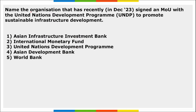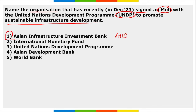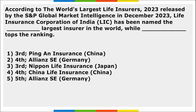Next: name the organization that has recently signed an MOU with UNDP to promote sustainable infrastructure development. It is the Asian Infrastructure Investment Bank (AIIB). They have recently partnered with UNDP to promote sustainable infrastructure development.